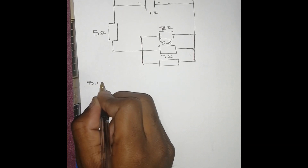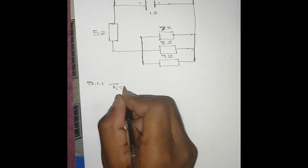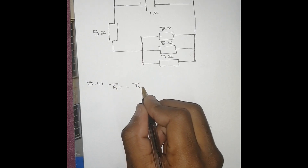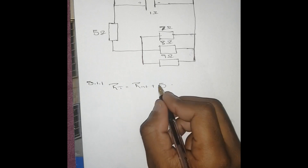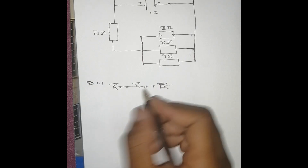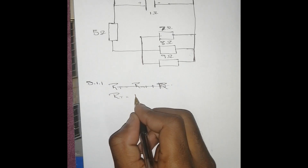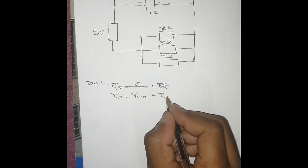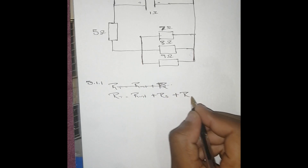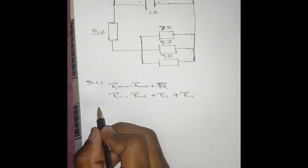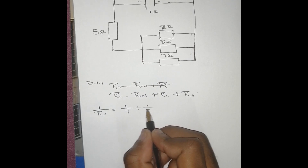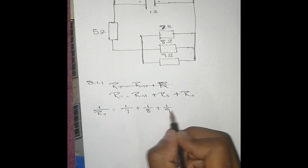The total resistance R_T equals R_internal plus R_series plus R_parallel. For R_parallel, since there are three resistors, we use the general formula: 1/R_parallel = 1/7 + 1/8 + 1/9.